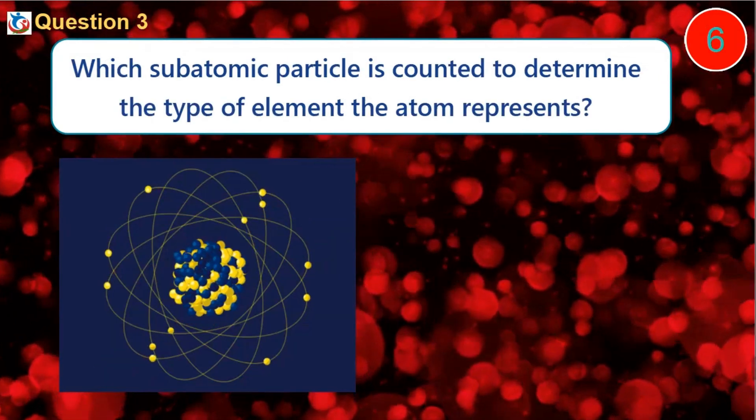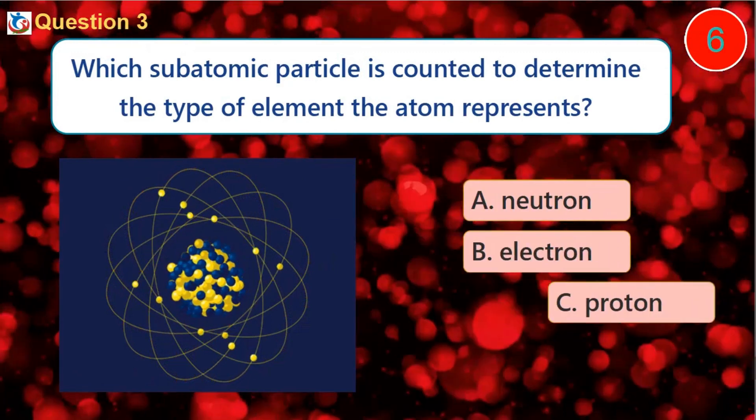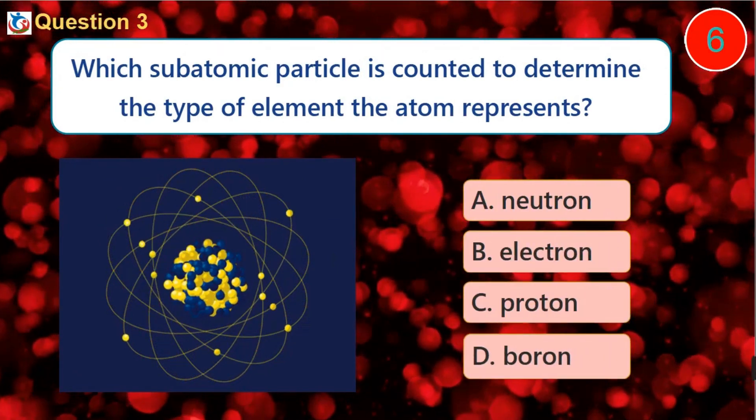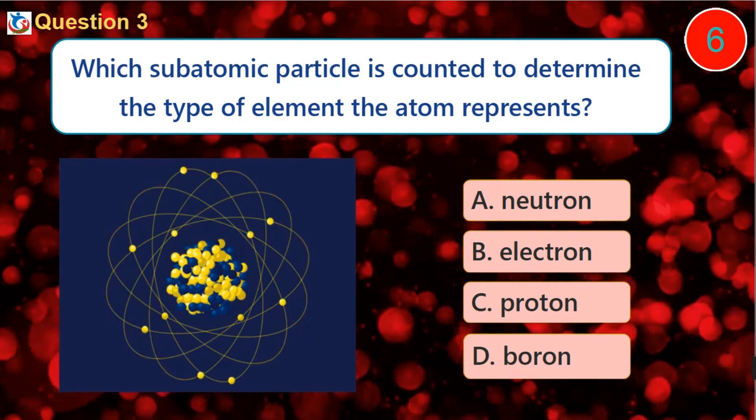Question 3. Which subatomic particle is counted to determine the type of element the atom represents? A. Neutron B. Electron C. Proton D. Boron